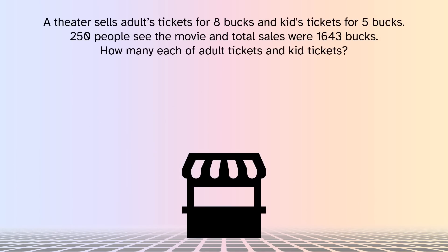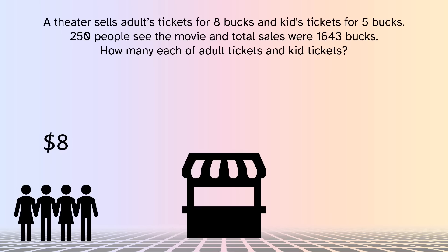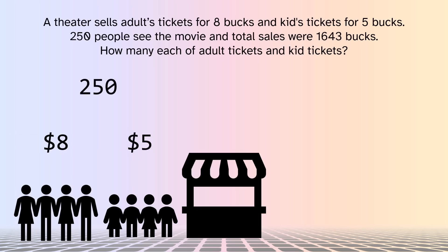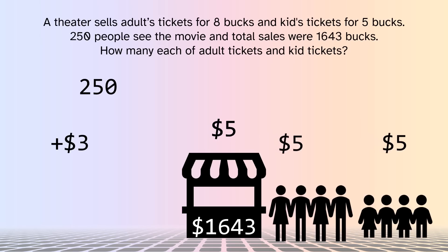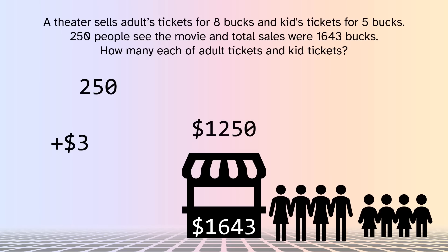Let's do another. A theater sells adult tickets for eight bucks and kids tickets for five bucks. Two hundred and fifty people see the movie, and total sales were one thousand six hundred and forty-three bucks. How many each of adult tickets and kids tickets? Again, the trick is to un-add: eight is five plus three. Now all we do is count. Everyone goes through the ticket booth — adults and children, either one, paying five bucks as they walk past. Two hundred and fifty people each just paid five bucks, so the theater earned one thousand two hundred and fifty bucks.